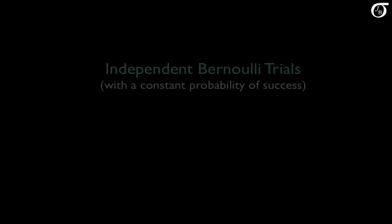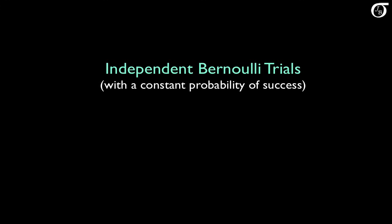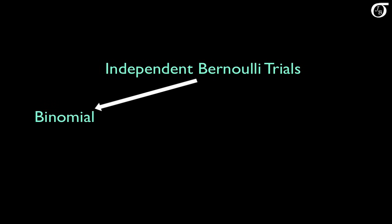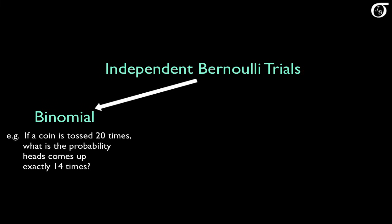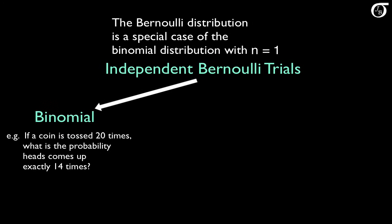Some other important distributions are built on the notion of independent Bernoulli trials, where we have a series of trials and each one results in a success or a failure. An important one is the binomial distribution, which is the distribution of the number of successes in n independent Bernoulli trials. For example, with the binomial distribution we can answer a question like: if a coin is tossed 20 times, what is the probability heads comes up exactly 14 times? The Bernoulli distribution is a special case of the binomial distribution with n equal to 1, a single trial.